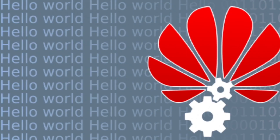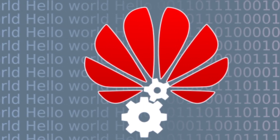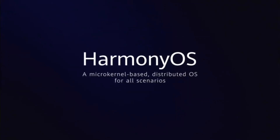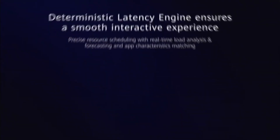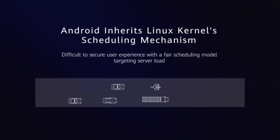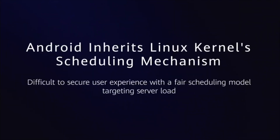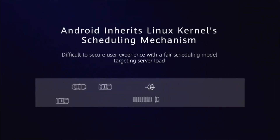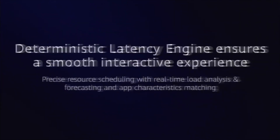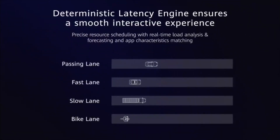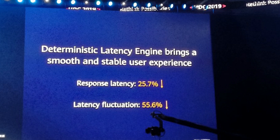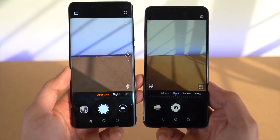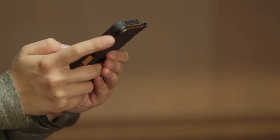The effect of this simplified protocol is faster discovery and connections of hardware like displays, cameras, speakers, and more. Unlike Android which uses the Linux kernel scheduling mechanism, Harmony OS uses a deterministic latency engine that provides precise resource scheduling with real-time load analysis, forecasting, and app characteristic matching. The result is a 25.7% and 55.6% improvement in response latency and latency fluctuations.